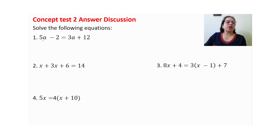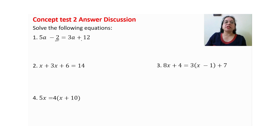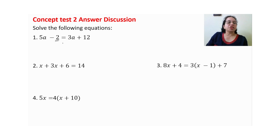The first question is: 5a minus 2 is equal to 3a plus 12. In the classroom situation, we bring the like terms together — variables on one side and constants on the other — so that students can apply the same approach when given a similar situation.